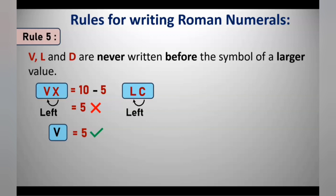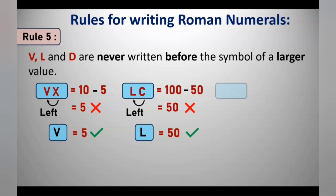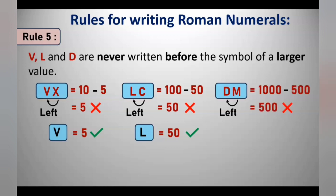Similarly, writing L before C would mean 100 minus 50, which is 50 — but that is wrong because we already have the symbol L for 50. Writing D before M would mean 1000 minus 500, which is 500 — also wrong because we already have D for 500. So remember, V, L, and D are never subtracted and never repeated.